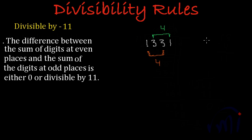Now if we find the difference, it will be 4 minus 4, which gives us 0. So this number 1,331 should also be divisible by 11.